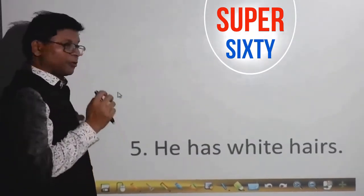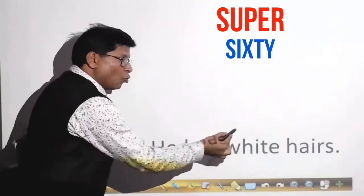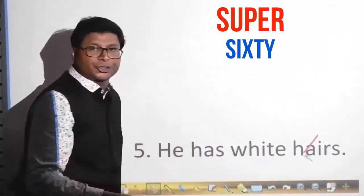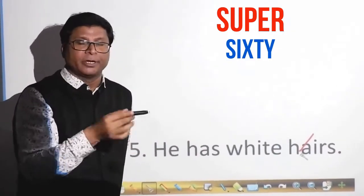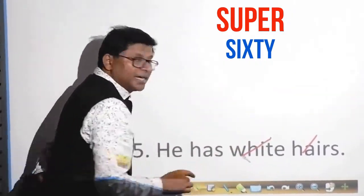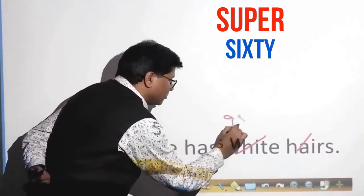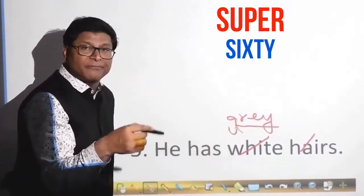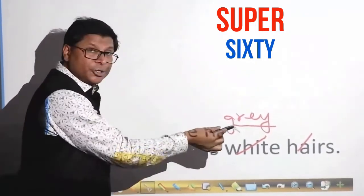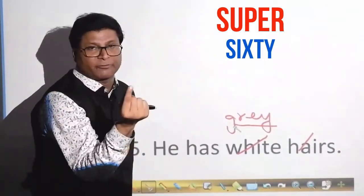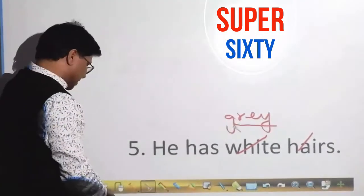The fifth sentence: 'He has white hairs.' This is wrong for two reasons. First, 'hair' is an uncountable noun, so you cannot say 'hairs.' Second, prefer 'gray' over 'white.' Say: 'He has gray hair,' 'She has gray hair.' However, if you use a numeral, 'hairs' is acceptable — for example, 'He has two gray hairs' is correct because a numeral is specified.